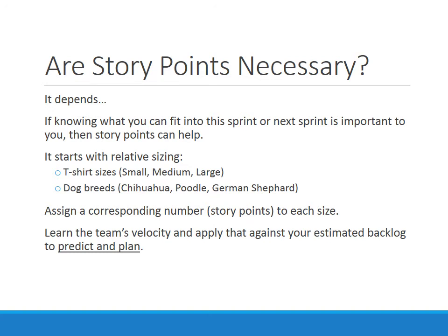Once you understand that relative size, you assign a number to it — like a story point — so that you have a numerical value to calculate against. You can then learn your team's velocity by adding up the number of story points completed associated with each user story, and that becomes your velocity. You can compare that against your estimated backlog, which is also estimated in story points, and that allows you to predict and plan — looking through and saying, okay, I think I can probably knock off these six stories the next sprint.